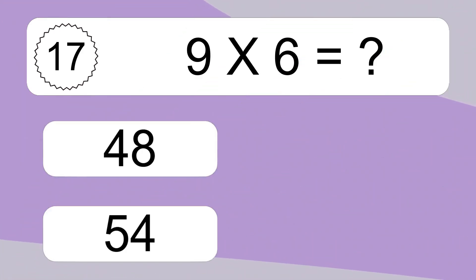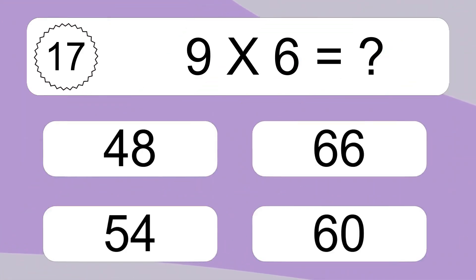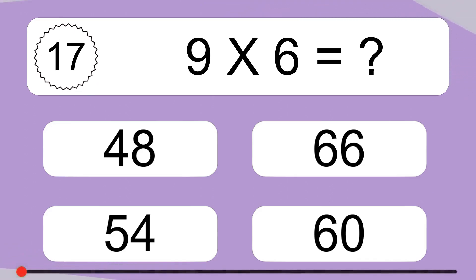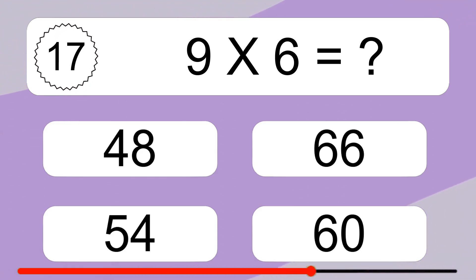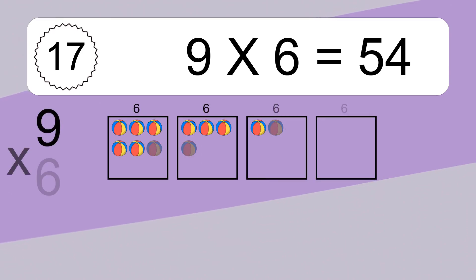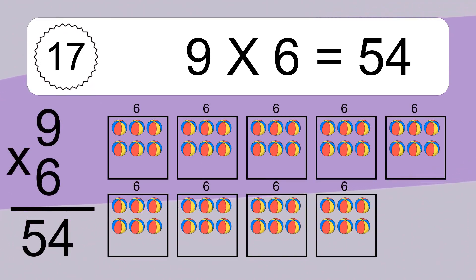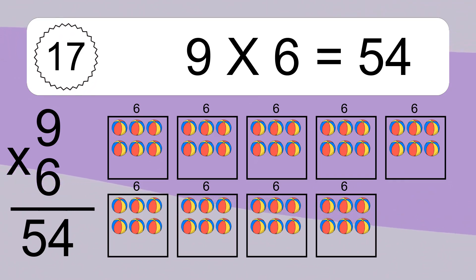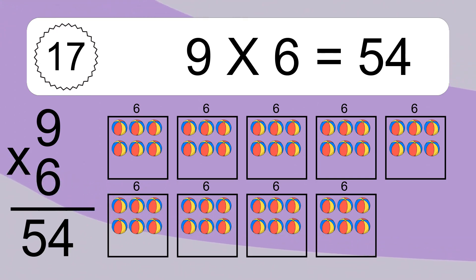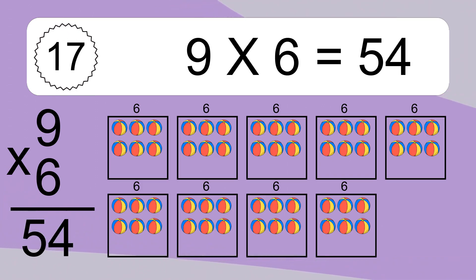9 times 6 equals what? 9 times 6 equals 54. We have 9 boxes and each box has 6 colorful balls inside. If you count all the balls in all the boxes together, you will have 9 times 6 balls. This equals 54 balls.